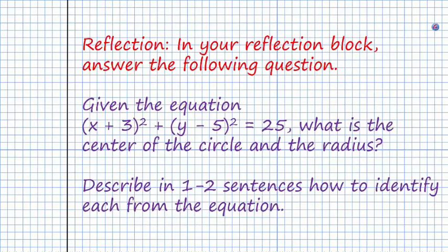Alright, that's all our notes for today. Your reflection today will be to answer the following question: Given the equation (x + 3)² + (y - 5)² = 25, what is the center of the circle and the radius, and then in one or two sentences describe how you identified the center and the radius from the equation. Have a wonderful day and I will answer any questions that you have in class. Thank you.